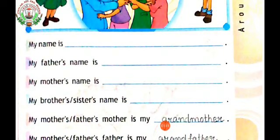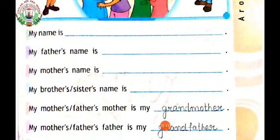The next question is: my brother's or sister's name is dash. So you have to write your brother's or your sister's name here. And the next question is: my mother's or father's mother is my grandmother. Once again, I am repeating the question — my mother's or father's mother is my grandmother.